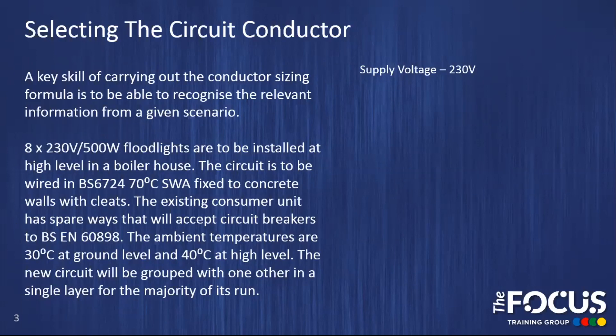One of the key skills of carrying out conductor sizing formulas, otherwise known as cable calculations, is to be able to recognize relevant information, either in practical circumstances, in real-world scenarios, or in simulated scenarios of exam questions. The example we have here is eight times 230 volt, 500 watt floodlights are going to be installed at high level in a boiler house. The circuit is to be wired in BS 6724 70 degree SWA, fixed to concrete walls with cleats. The existing consumer unit has spare ways that will accept circuit breakers to BS EN 60898. The ambient temperatures are 30 degrees at ground level and 40 degrees at high level. The new circuit will be grouped with one other in a single layer for the majority of its run. So what key information can we pick out from this scenario?